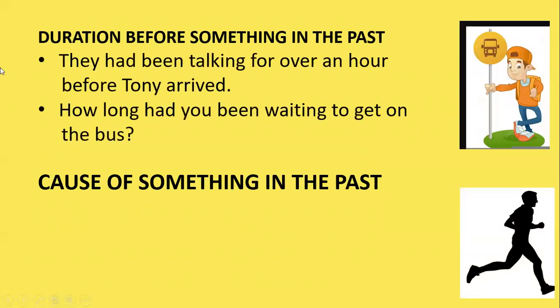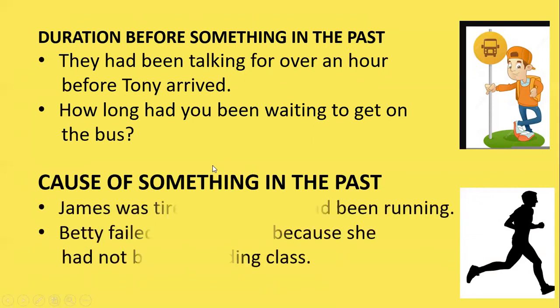For duration before something in the past with past perfect continuous: 'They had been talking for over an hour before Tony arrived.' We use the past perfect continuous to show that something started in the past and continued up until another time in the past. Expressions like 'for five minutes,' 'for two weeks,' or 'for over an hour' are durations used with past perfect continuous — for actions which began before a certain point in the past and were still in progress at that point.